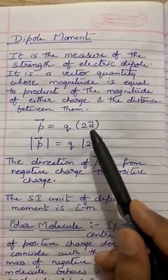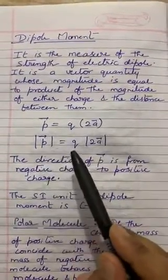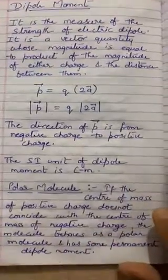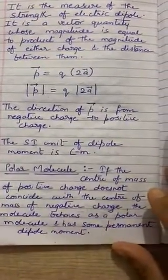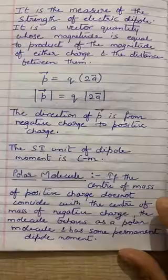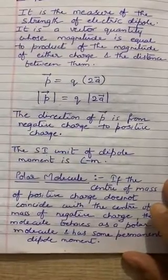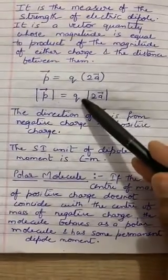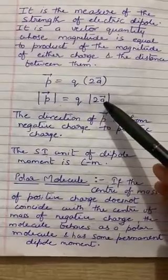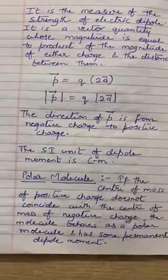There is a vector over a. For the magnitude, it is Q times the modulus of 2a. From this formula, we can derive the unit of the electric dipole moment: Coulomb for charge and meter for a — that means Coulomb meter.